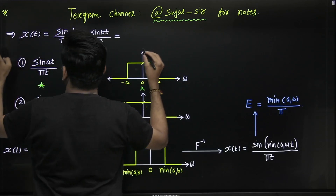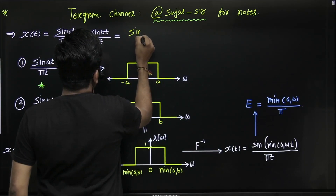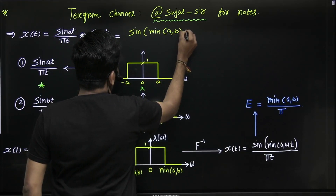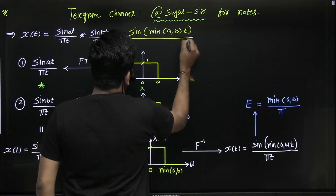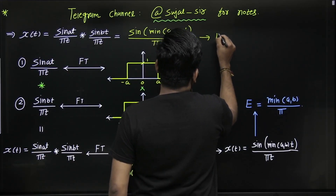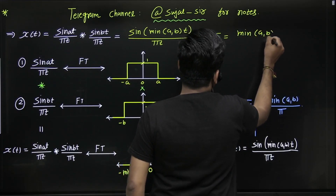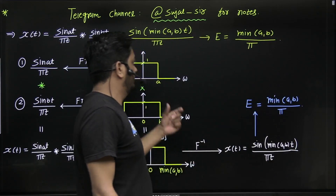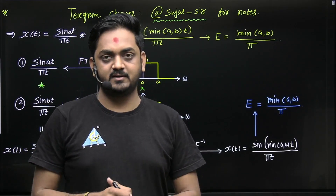So the final answer — a shortcut you can remember to save time in the exam — is: the convolution of sin(at)/πt and sin(bt)/πt equals sin(min(a, b) · t) / (πt), and its energy is min(a, b) / π. Remember this shortcut, guys!